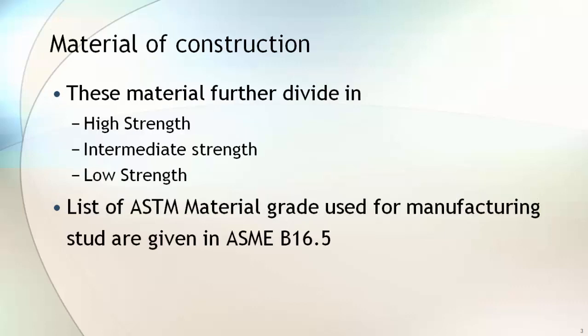These materials can further be classified as High Strength, Intermediate Strength, and Low Strength. List of ASTM material grades that can be used to manufacture bolting material are given in ASME B16.5.